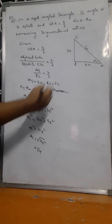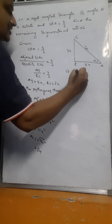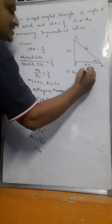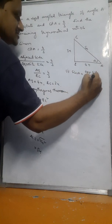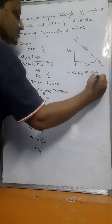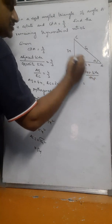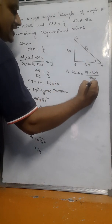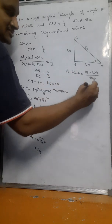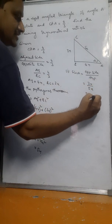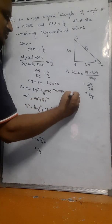Now finding the remaining trigonometric ratios. Sine A equals opposite side by hypotenuse. The opposite side is BC equals 3x, and hypotenuse is 5x. So sine A equals 3x by 5x, giving 3 by 5.